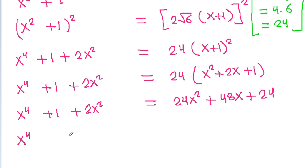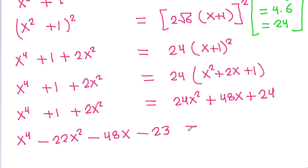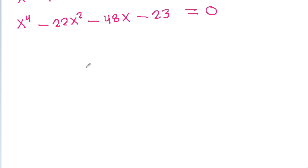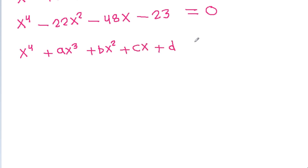Bringing everything to one side: x⁴ + 2x² - 24x² - 48x + 1 - 24 = 0, which simplifies to x⁴ - 22x² - 48x - 23 = 0.